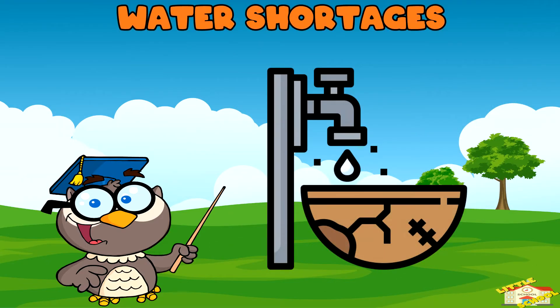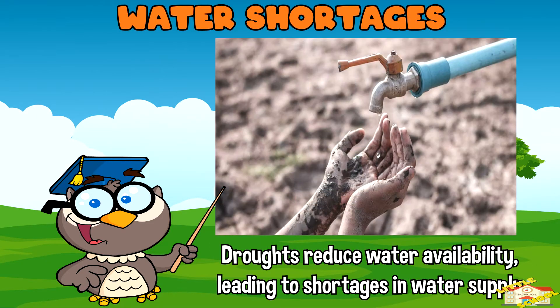Water shortages. Droughts reduce water availability, leading to shortages in water supply for drinking, agriculture, industry, and other purposes.